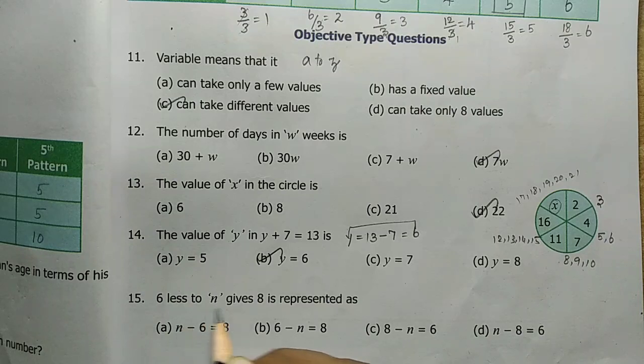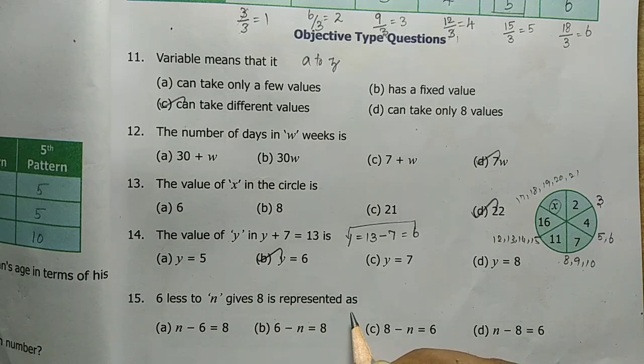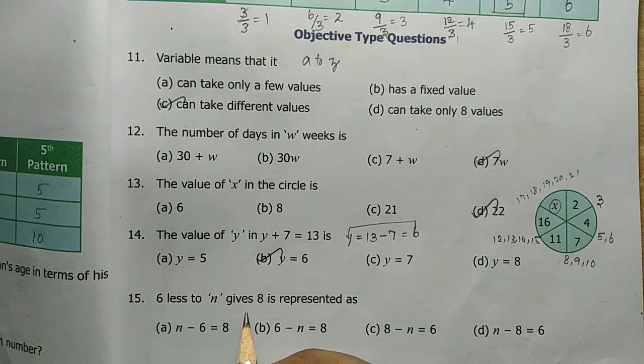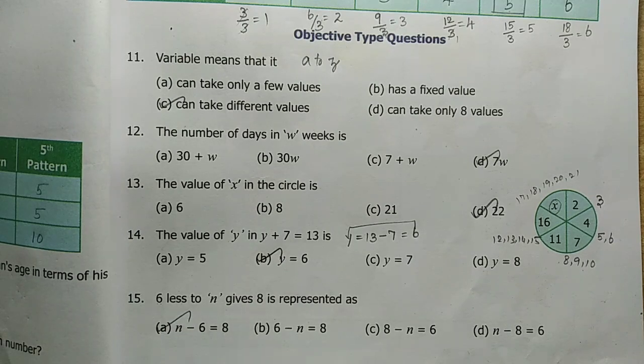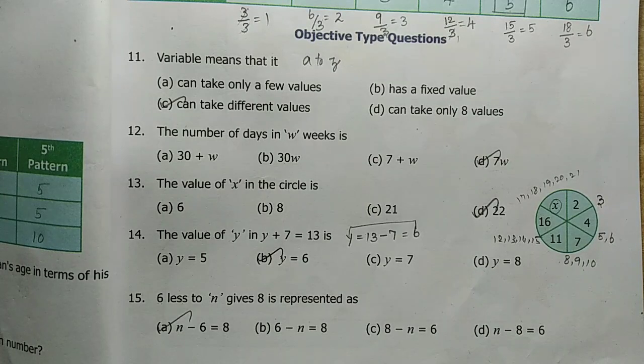Last one, 6 less to n gives 8 is represented as. The algebraic statement: n minus 6. Less means subtraction sign, so n minus 6. Gives means equal to, we get 8. So n minus 6 that is equal to 8, answer A.